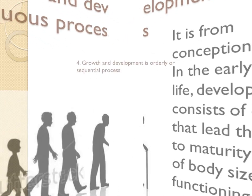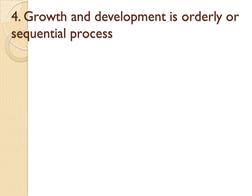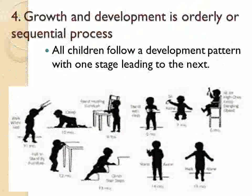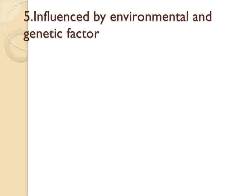The next principle is that growth and development is an orderly or sequential process. Infants stand before they walk, and draw circles before they make squares. It shows that every species, whether animal or human, follows a pattern of development peculiar to it. This pattern in general is the same for all individuals. All children follow a development pattern with one stage leading to the next.